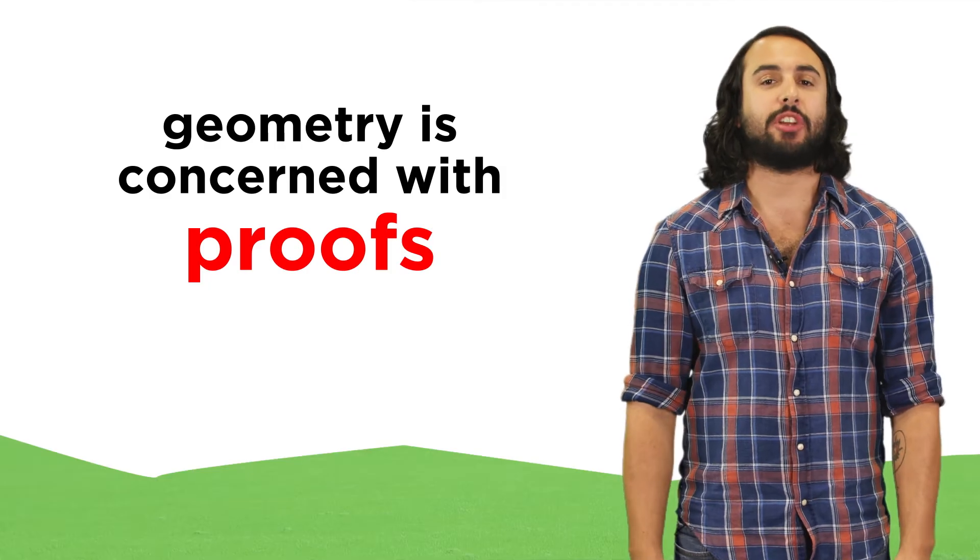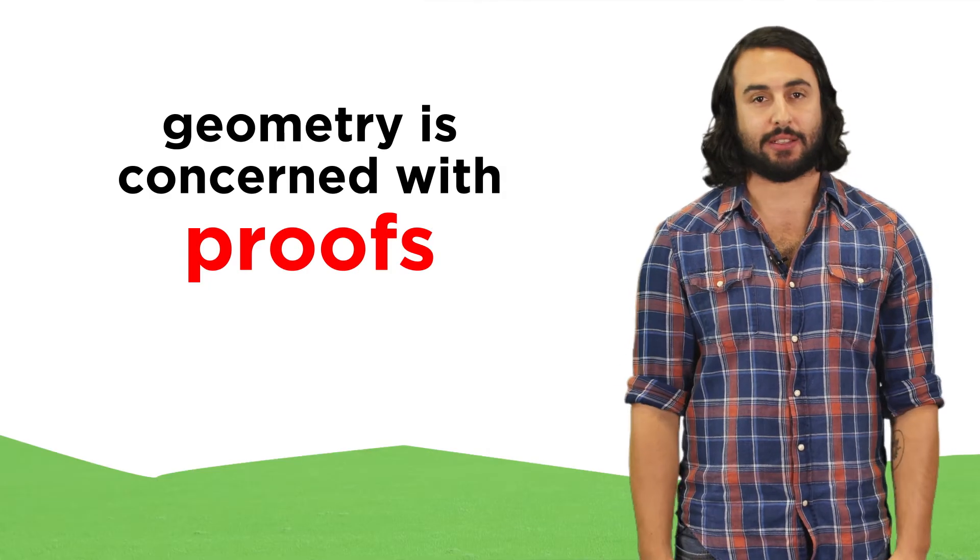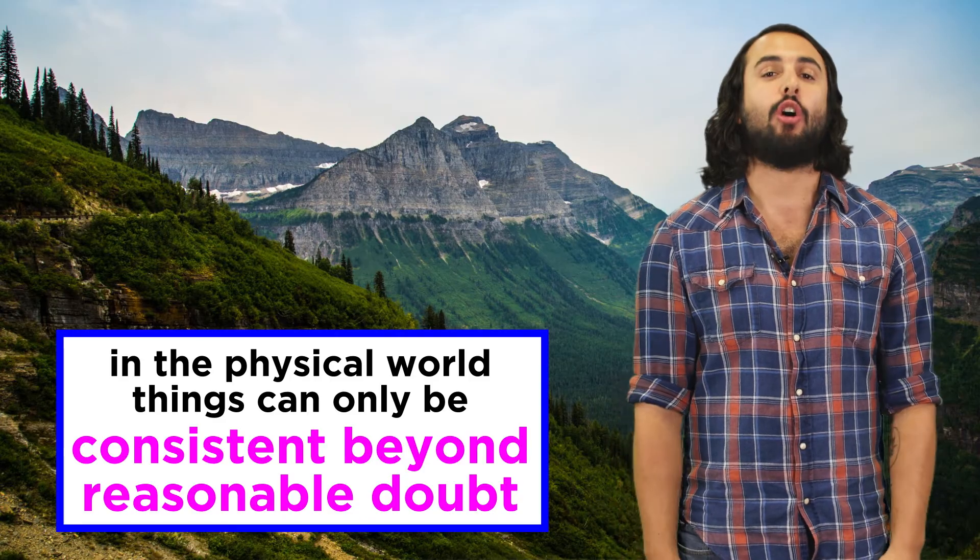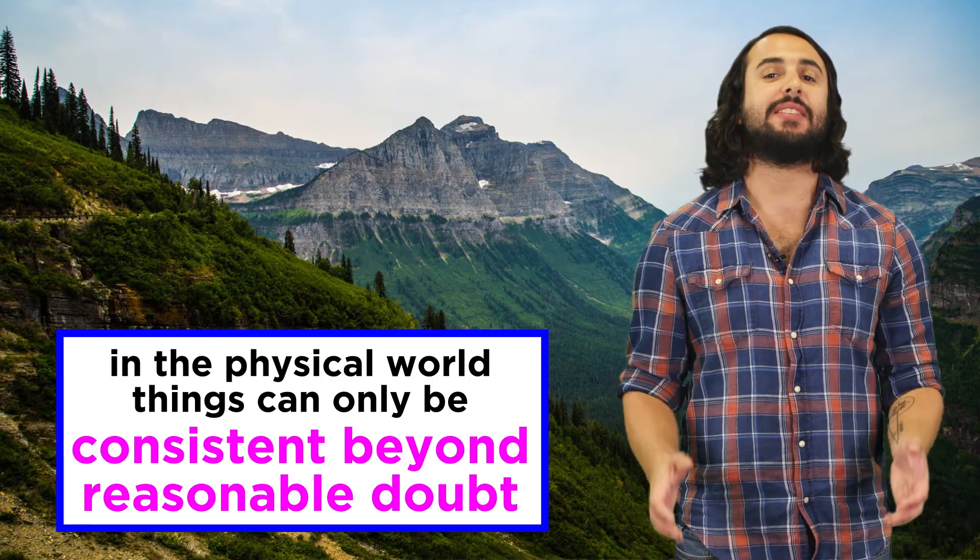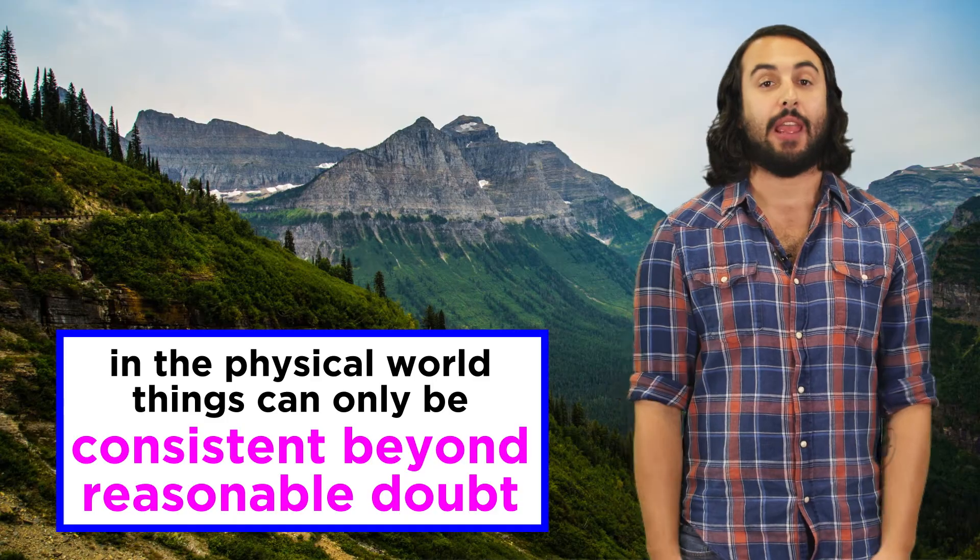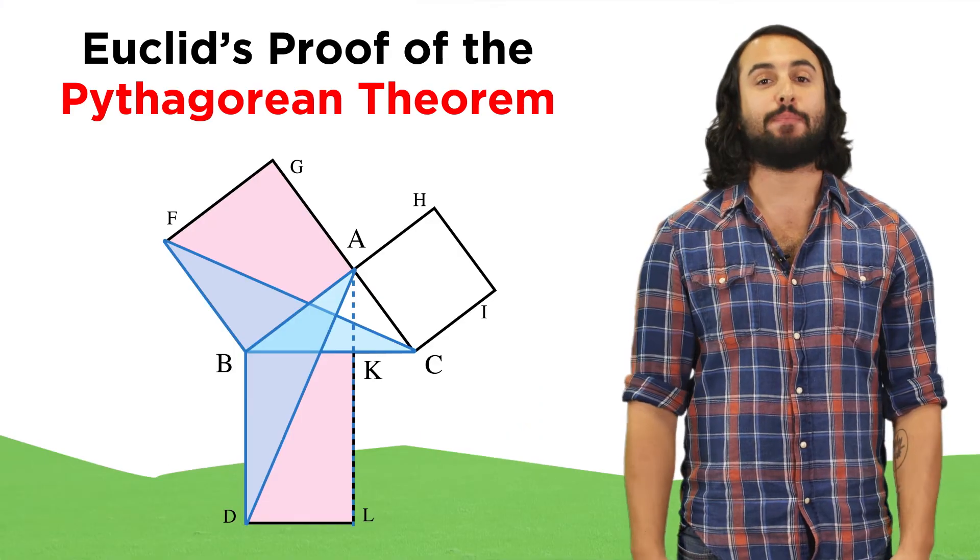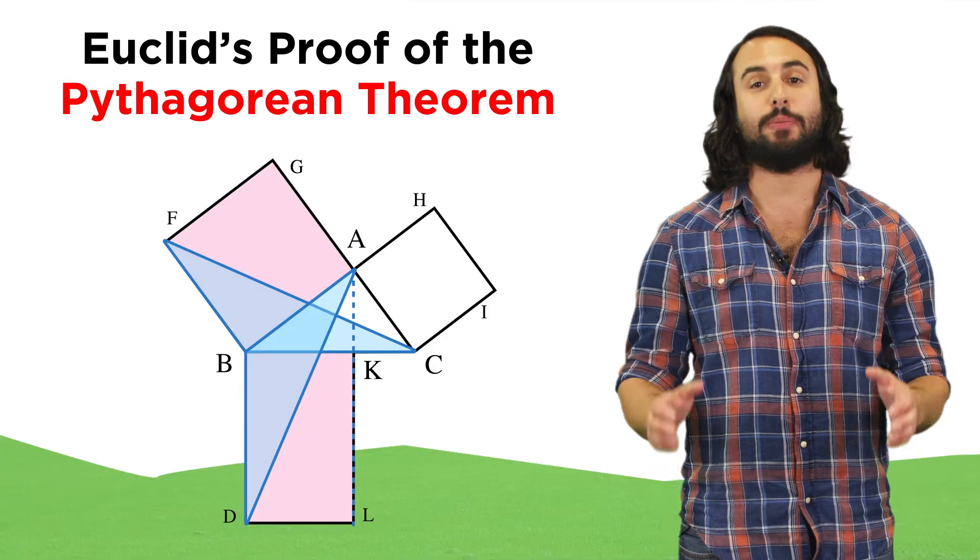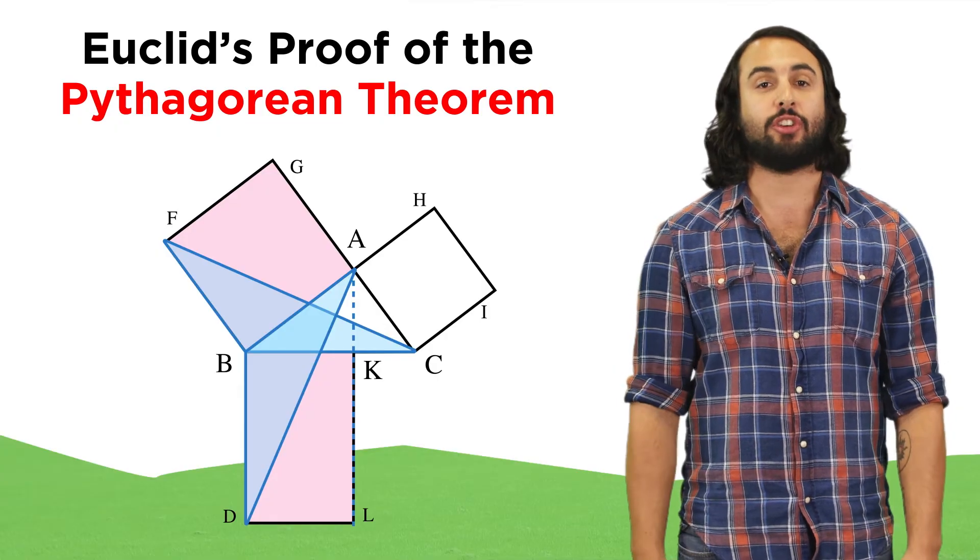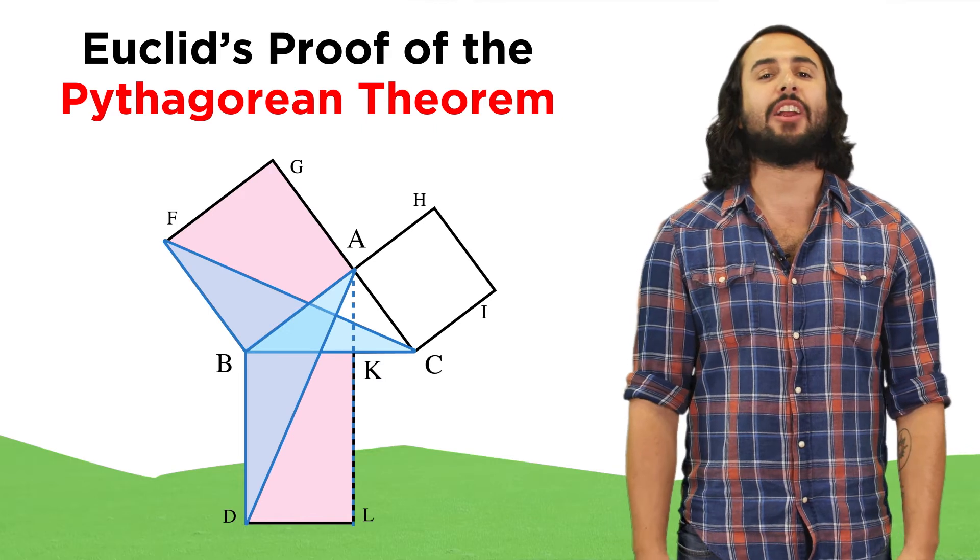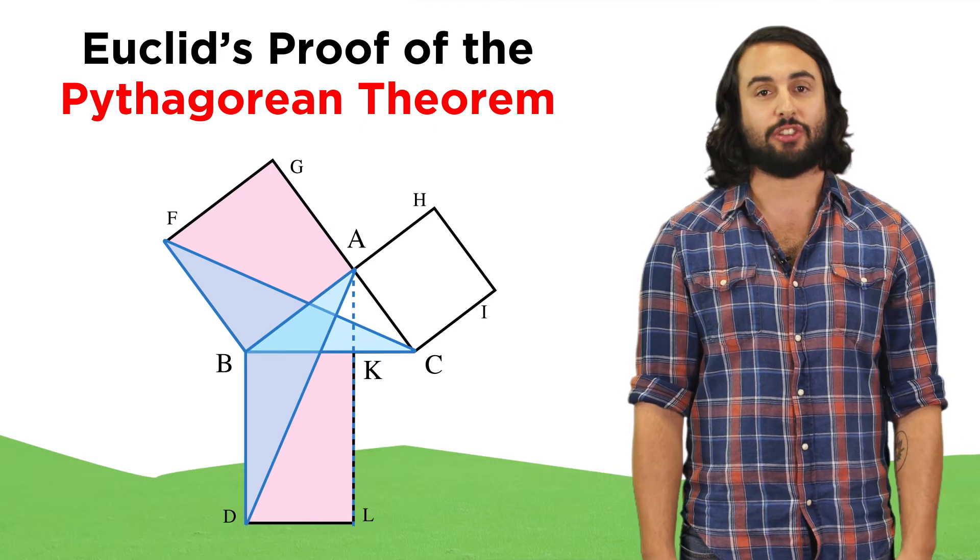In geometry, we are sometimes concerned with proving things. Unlike the real world, where nothing could ever be proven, only shown to be consistent beyond reasonable doubt, in the perfect realm of mathematics, things can indeed be proven to be inarguably true, and our construction of proofs, as meticulous as they may seem, are incredible demonstrations of logic.